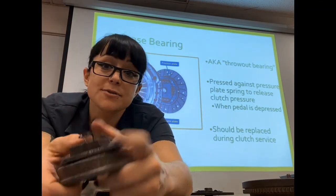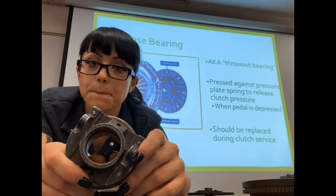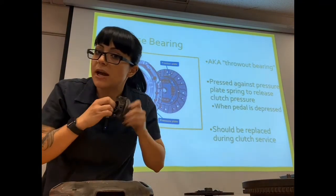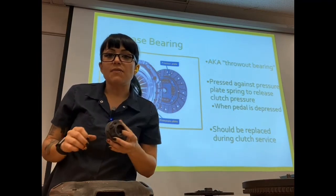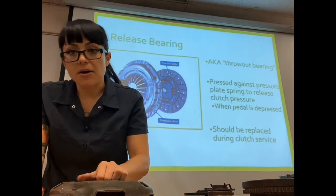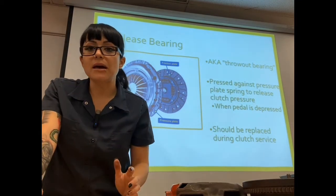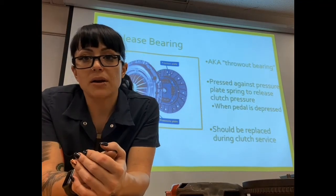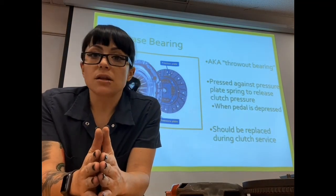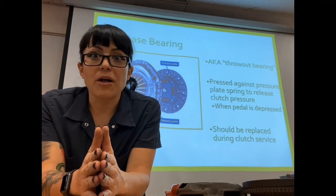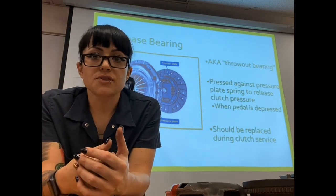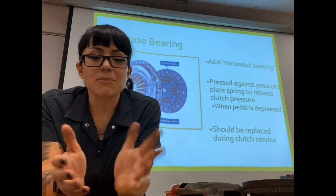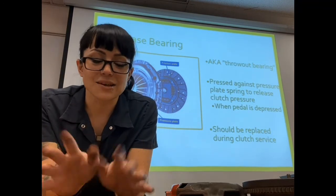This is also known as a throwout bearing — release bearing and throwout bearing are the same thing. When this throwout bearing starts to go bad, it's going to create a grinding noise when you are pressing in or out of the clutch. If you get a grinding noise that goes away when you press in on the clutch, that's your throwout bearing. Every time you replace a clutch, you should replace that throwout bearing as well because you're already there — if you don't, it'll end up costing you more money when it fails later.